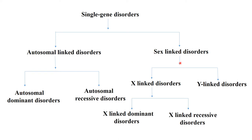Sex-linked disorders divide into X-linked and Y-linked disorders. X-linked disorders may be X-linked dominant or X-linked recessive. In the further slides we will look at examples of each type: autosomal dominant, autosomal recessive, X-linked dominant, X-linked recessive, and Y-linked disorders. The autosomal dominant disorder will be discussed in detail in this lecture, and the other disorders will be discussed in further lectures.